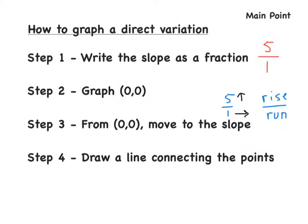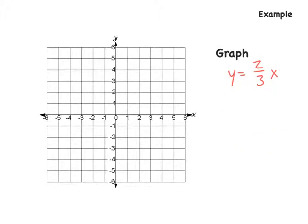So now we want to graph y equals two-thirds x. We know our slope and constant of variation are the same thing, so our slope is two-thirds. Write it in fraction form. Second, go to point (0, 0). Now we start at (0, 0). Remember that slope is rise over run — in this case, we rise 2 and run 3. So from (0, 0), we rise 2 — 1, 2 — and we run to the right 3 — 1, 2, 3 — and we make our point right there.